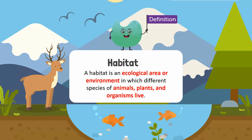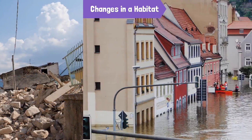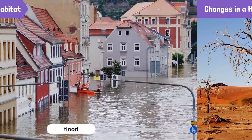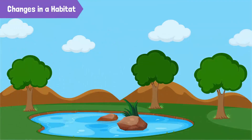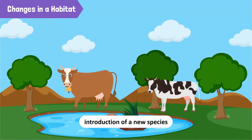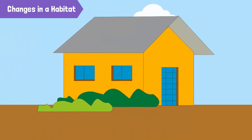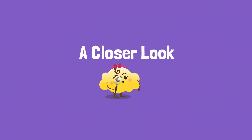Habitats change all the time. Some of these changes are due to natural causes like earthquakes, floods, or droughts. Other changes are due to the influence of humans, like the introduction of a new species or deforestation. Let's take a closer look at the factors that cause habitats to change.